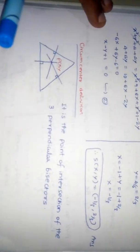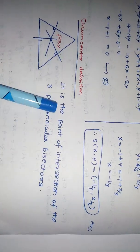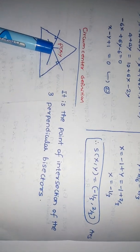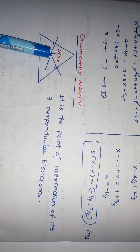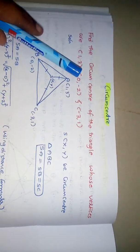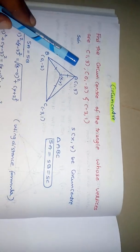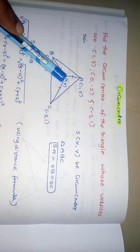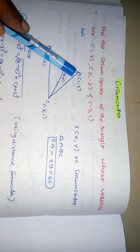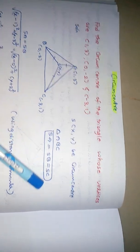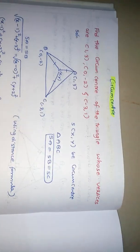Now we will see the circumcenter. The circumcenter is simply the point of intersection of the three perpendicular bisectors. These three perpendicular bisectors intersect at one point, which is called the circumcenter.